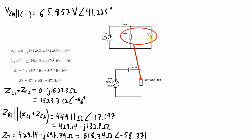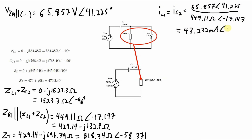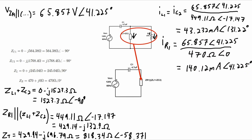I can use that voltage to calculate the current through each of these two components. I calculate that current, and then I can calculate the current through R1 — that's the same voltage divided by the impedance of the resistor. The last two values I need are the voltage across inductor 1 and the voltage across capacitor 2, and I can use this current along with the impedance of capacitor 2 and inductor 1 to calculate those voltages.